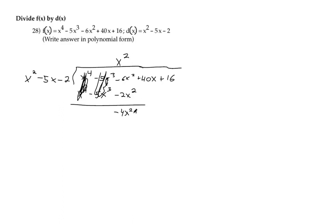So we can carry down the plus 40x but I'm actually going to carry down another term because this term has three terms. So we need to have three terms down here. So we'll carry down the next one as well and then repeat the process.